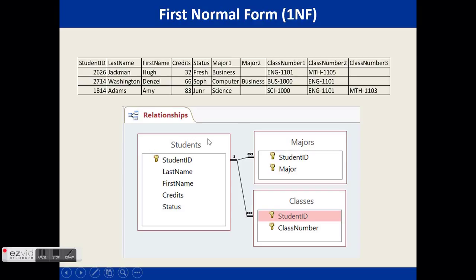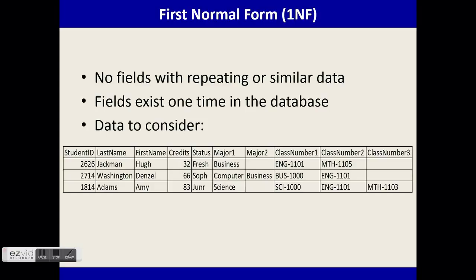Here's the relationships view — we have a students table now with majors and classes. It is now in first normal form. In successful first normal form, there are no fields with repeating or similar data; each field exists only one time and cannot be broken down further — for example, our student table with majors or our student table with classes.